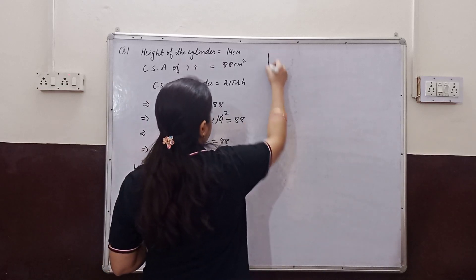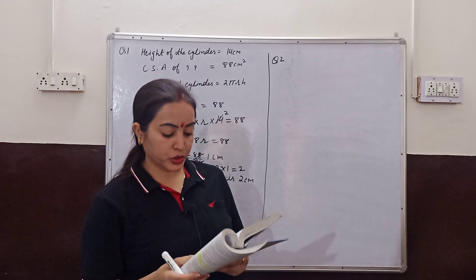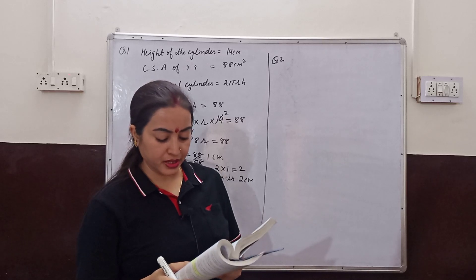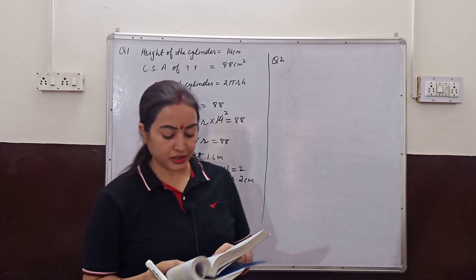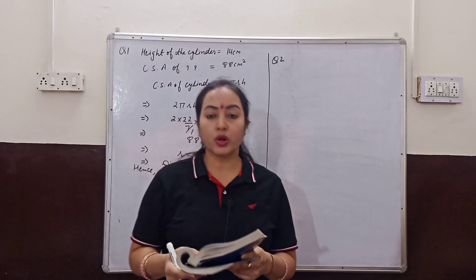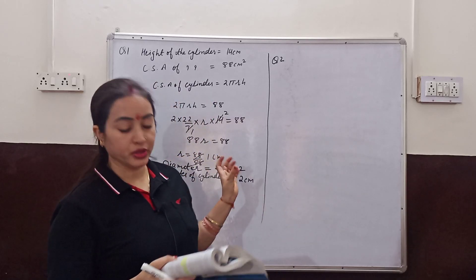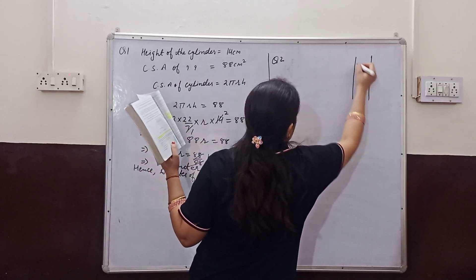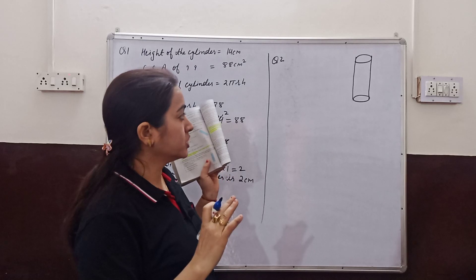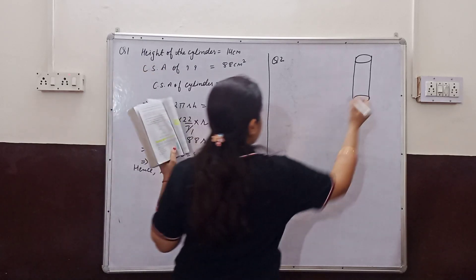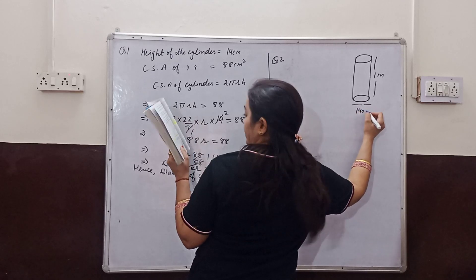Question number 2. It is required to make a closed cylindrical tank of height 1 meter and base diameter equal to 140 cm from a metal sheet. You have to find how many square meters of sheet are required to make this closed cylindrical tank of height 1 meter and diameter 140 cm.